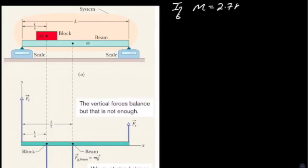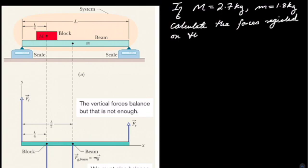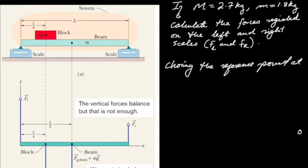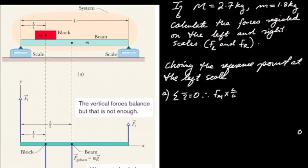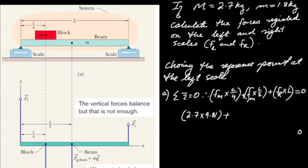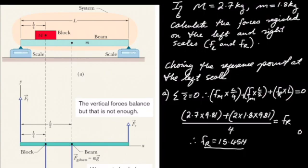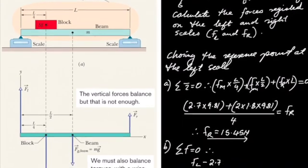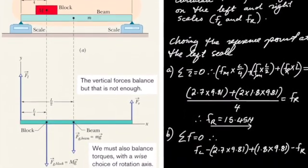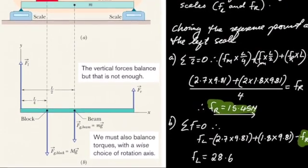In the next example, we have a block of mass 2.7 kilograms placed on a beam having a mass of 1.8 kilograms, and we have to calculate the forces at each of the two stands at the extremities. Because we have two unknowns, we choose a reference point at one of the scales. Taking the left scale and applying rotational equilibrium, the sum of the torques must equal zero. Substituting the lengths and forces, we get FR to be 15.45 newtons. We can then apply translational equilibrium and substitute FR to get FL to be 28.69 newtons.